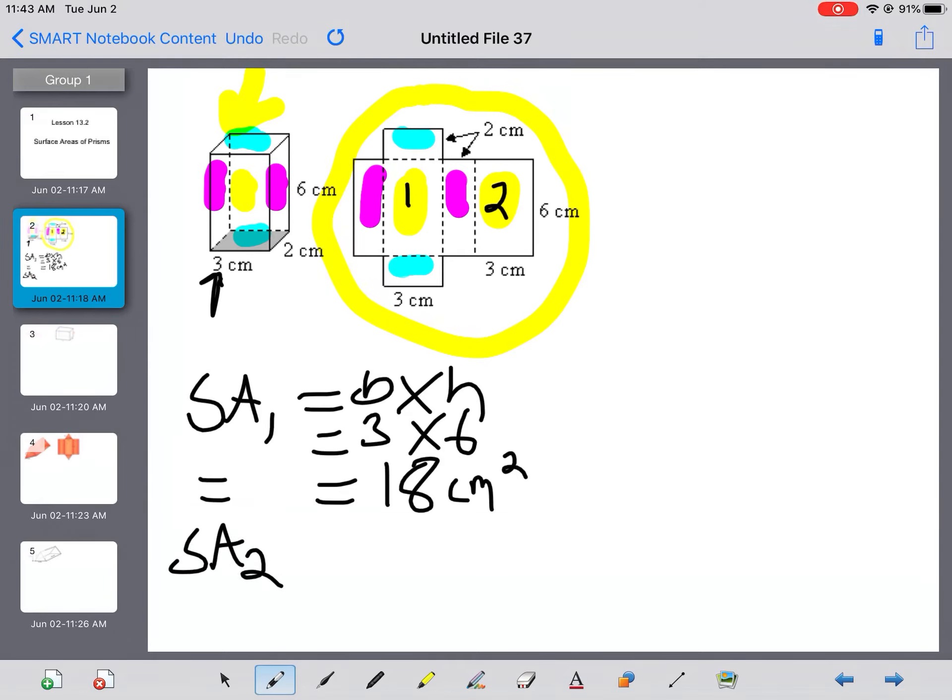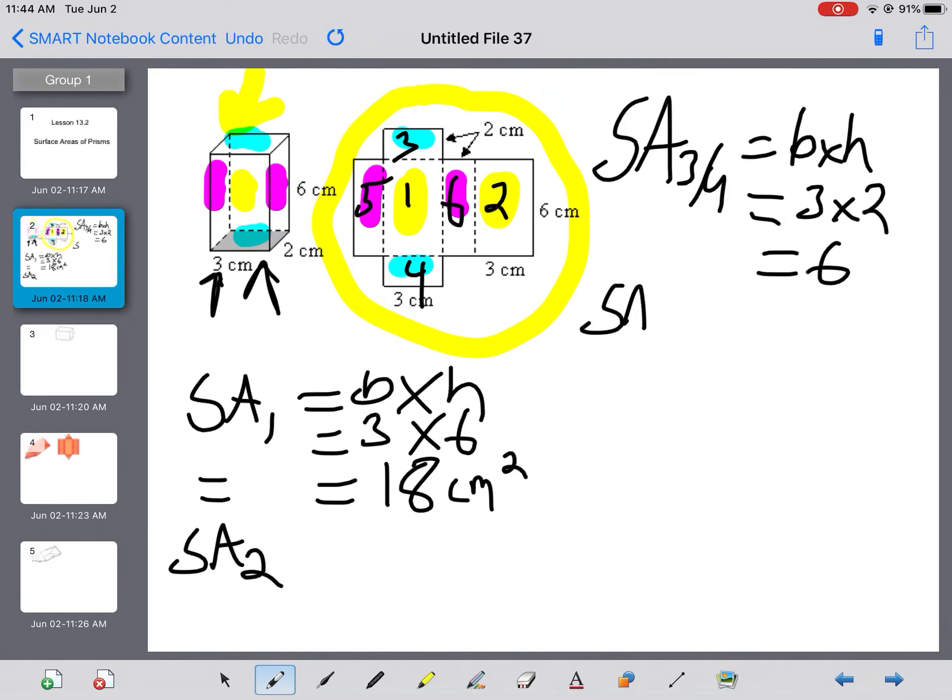Then I could do surface area three and four. It's still base times height. You just have to be really careful. What is your base? What is your height? If I look at the blue at the bottom here, I get three times two. I will get six. Then we finally have the purple, surface area five and six. Base times height again, and I get five times six, which is 30.